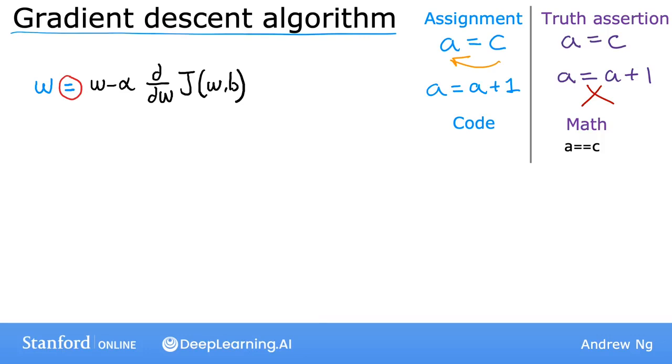Now, let's dive more deeply into what the symbols in this equation mean. The symbol here is the Greek alphabet alpha, and in this equation, alpha is also called the learning rate. The learning rate is usually a small positive number between 0 and 1, and it might be, say, 0.01. What alpha does is, it basically controls how big of a step you take downhill. So if alpha is very large, then that corresponds to a very aggressive gradient descent procedure where you're trying to take huge steps downhill. And if alpha is very small, then you'll be taking small baby steps downhill. We'll come back later to delve more deeply into how to choose a good learning rate alpha.